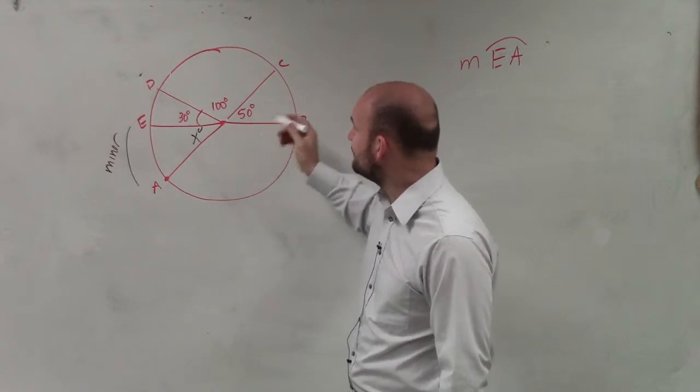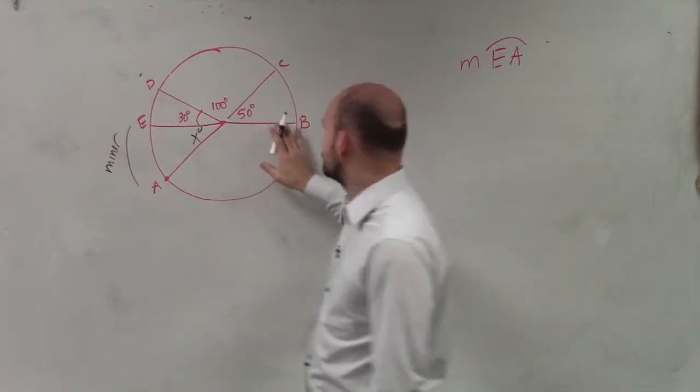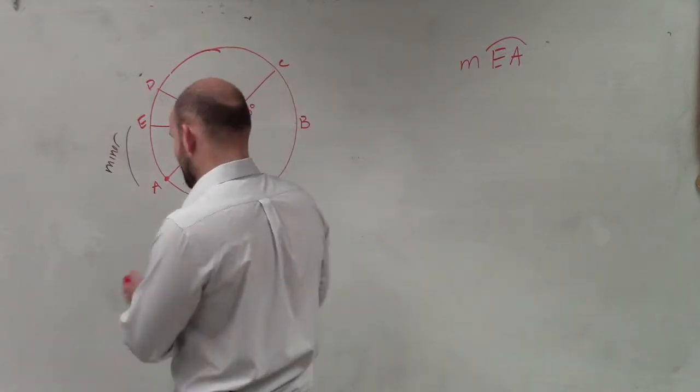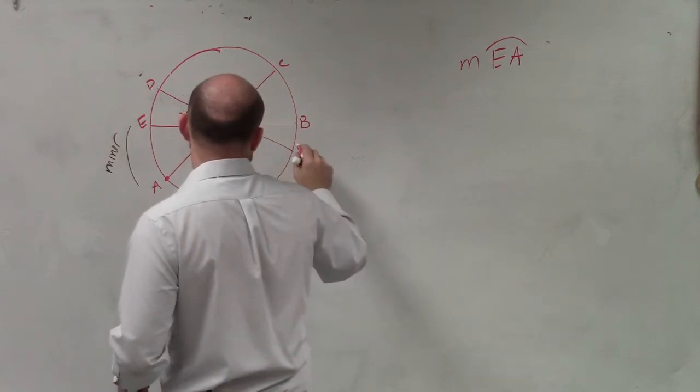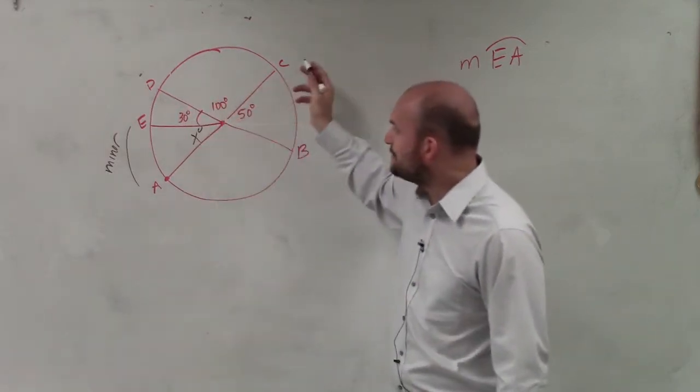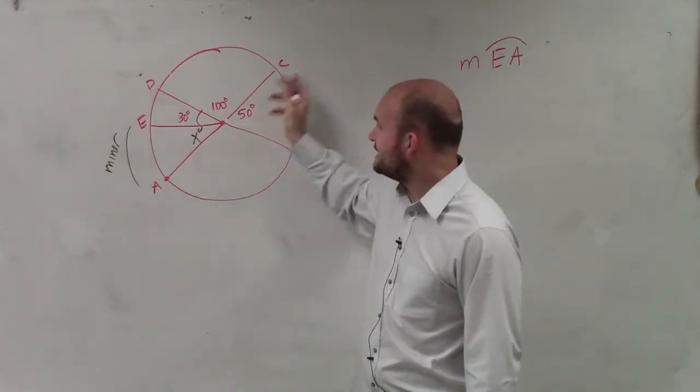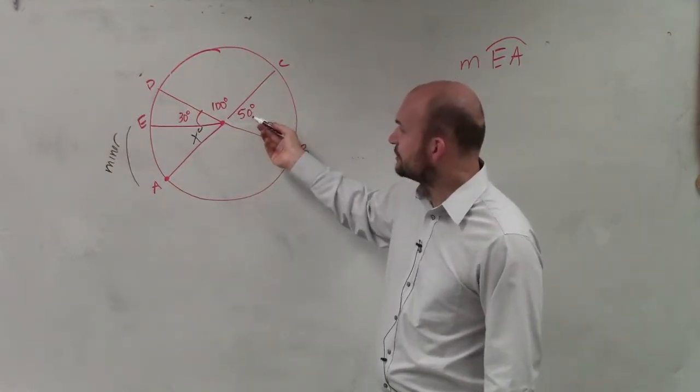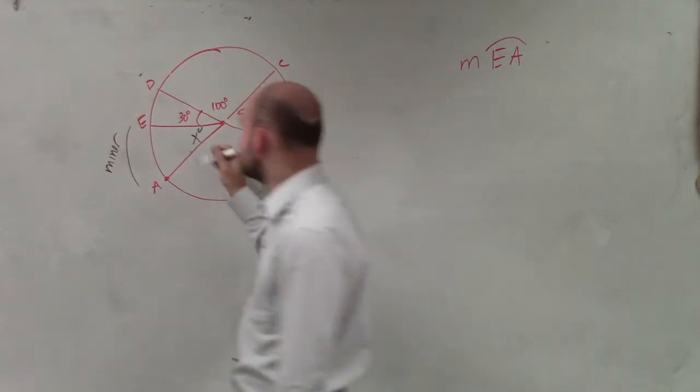And you guys can see we have, that's actually drawn incorrectly. That's supposed to be like this. Sorry. But what you guys can see is we have opposite angles, AC and DB. So therefore, if that's 50 degrees, that has to be 50 degrees.